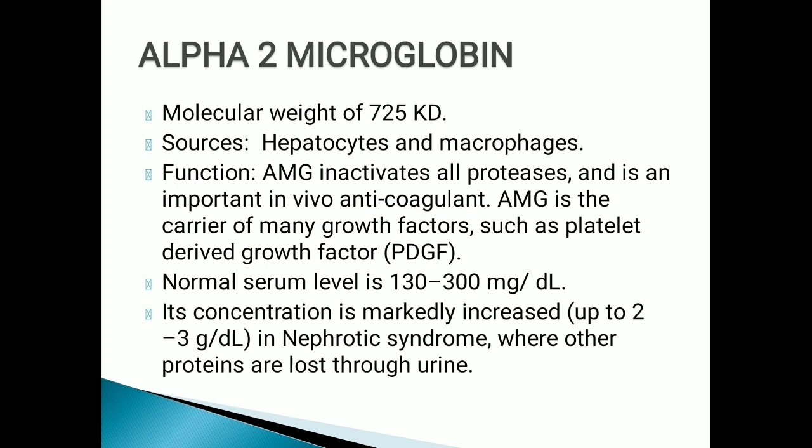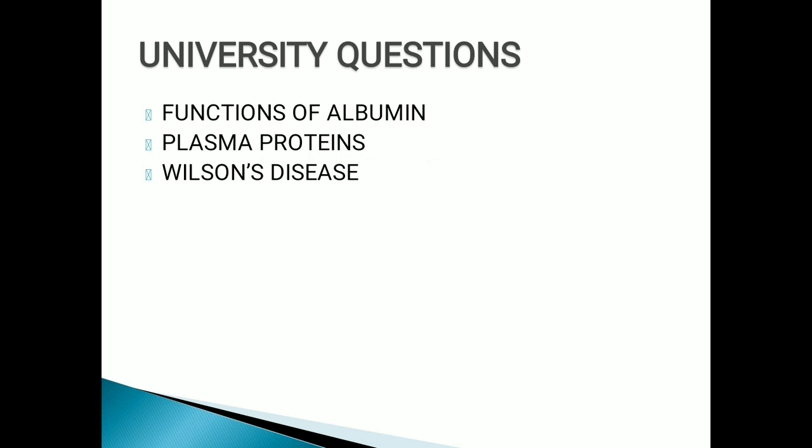Alpha-2 macroglobulin: sources are hepatocytes and macrophages. Its function is to activate proteases and it is an important in vivo anticoagulant. It also carries platelet-derived growth factor. Normal level is 130 to 300 mg/dL, but in nephrotic syndrome, where all other proteins are lost in urine, its level goes up to 2 to 3 gram per deciliter.